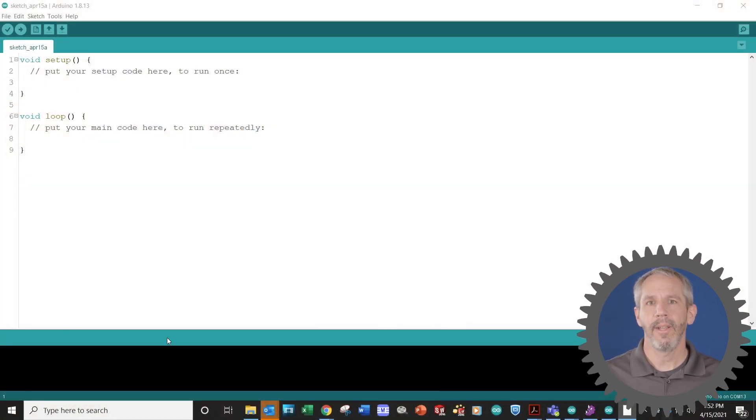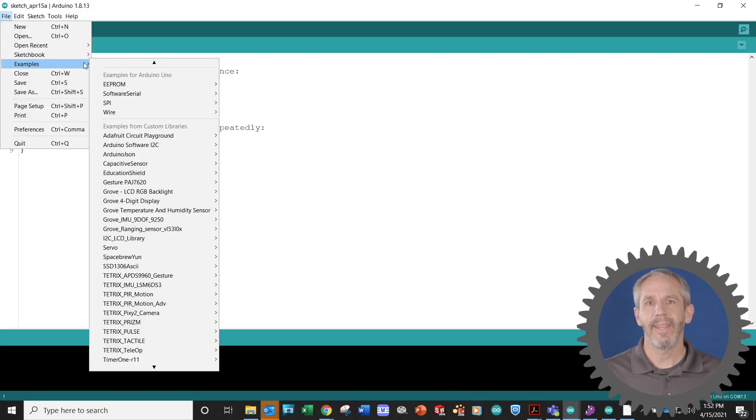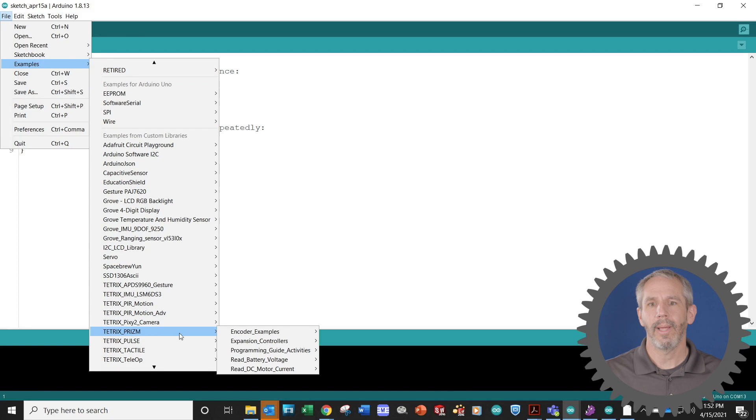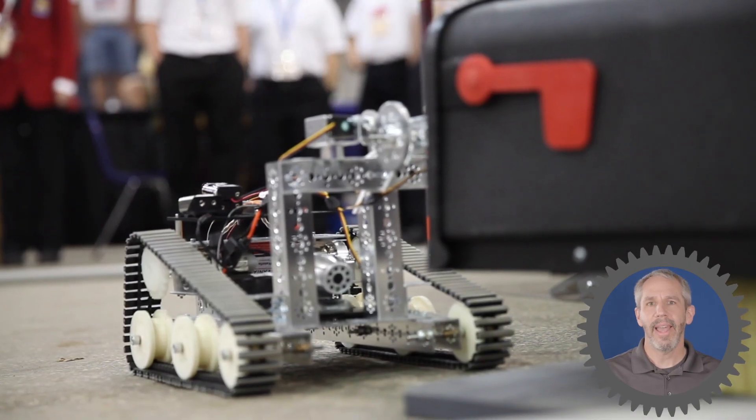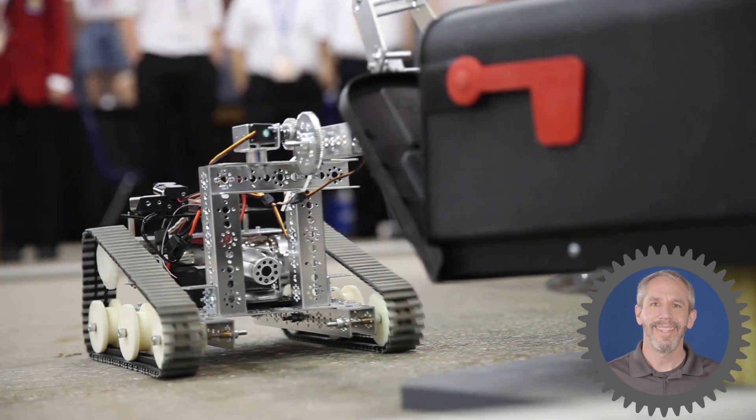For more on using the encoders on your torquenado motors, check out the encoder examples that are provided in the Tetrix Prism Arduino library. And as always, remember to have fun, build some robots with encoders, and we'll see you next time.